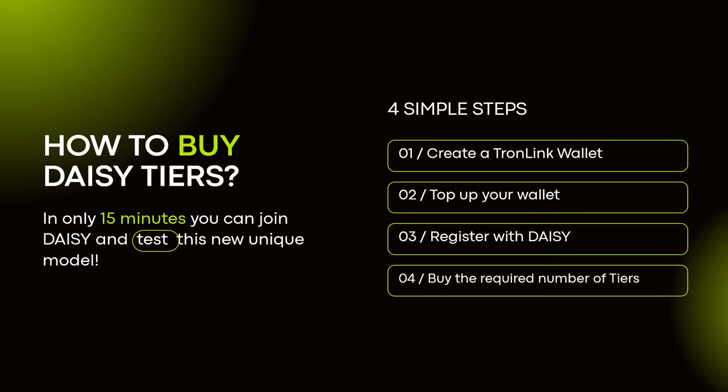To join Daisy you need USDT on the Tron blockchain. You might want to use TronLink as the preferred wallet, or Token Pocket, which is more user-friendly. Top up your wallet with USDT, and you'll also need some TRX — the native cryptocurrency of the Tron blockchain — to pay the blockchain fee. You then get a link from your introducer, because this is an invite-only business model, and use that link to register.